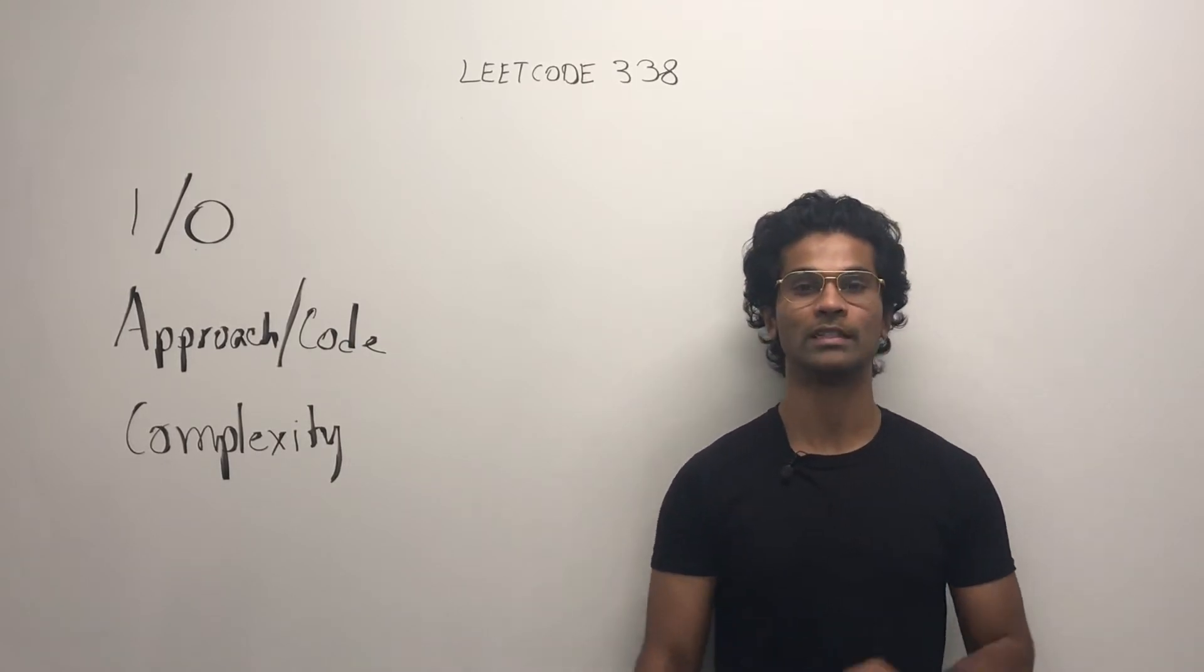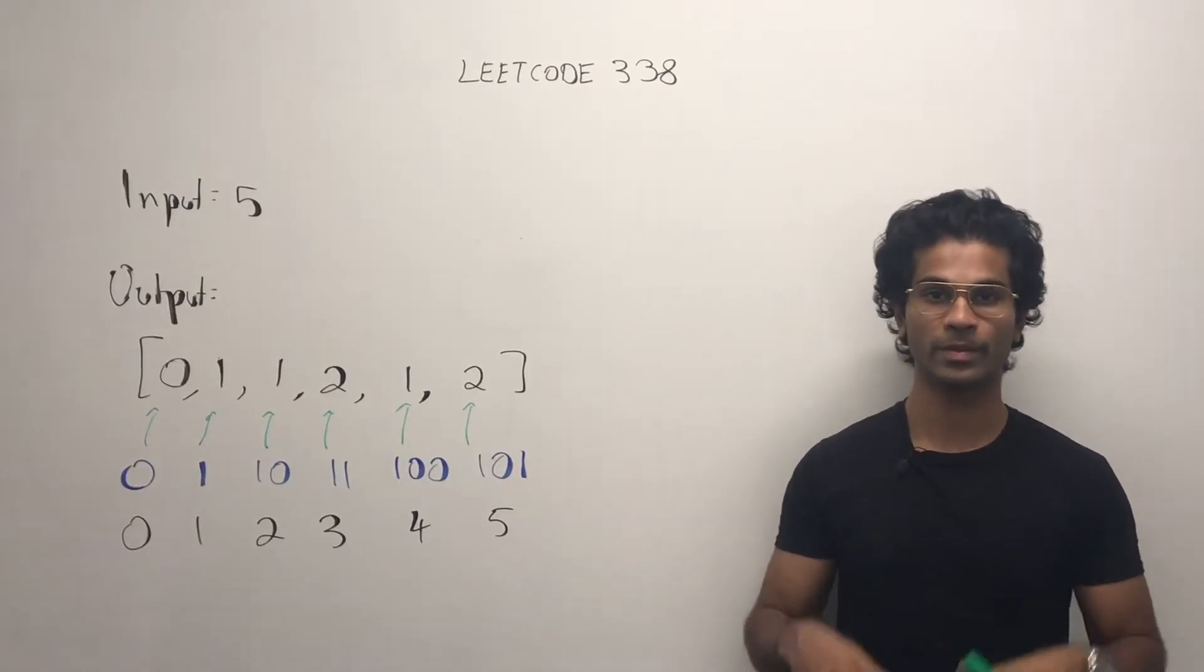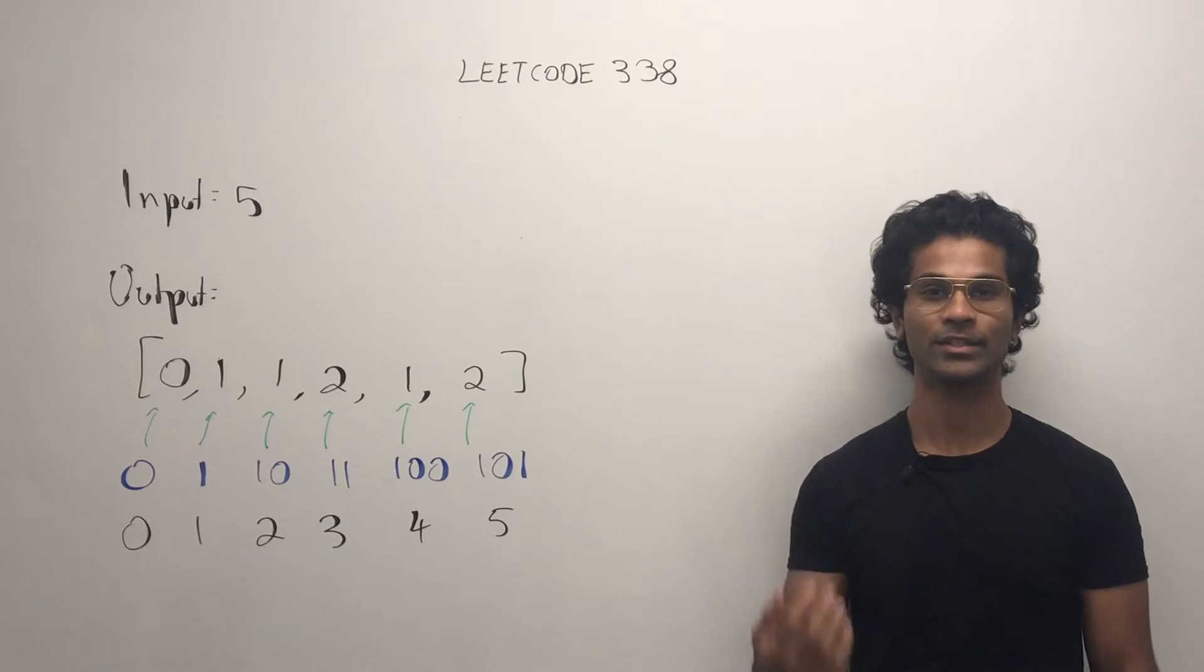I'm going to go over the DP approach because the simple approach is pretty straightforward. So the input is going to be an integer and the output needs to be an integer array.